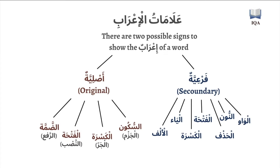That change at the end of the word sometimes happens with the original signs: the Dhamma for Raf'a (e.g., Muhammadun), the Fatha for Nasb (e.g., Inna Muhammadan), the Kasra for Jarr (e.g., Fi Muhammadin), and the Sukun for Jazm (e.g., Lam Adhaab).